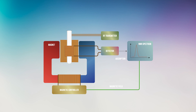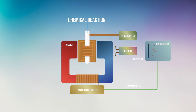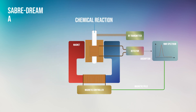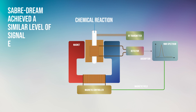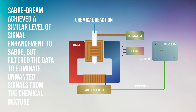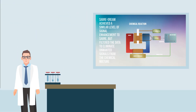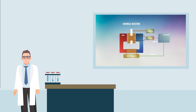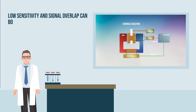Dr. Norcott tested this approach, comparing SabreDream to each technique in isolation while monitoring the progress of a chemical reaction. SabreDream achieved a similar level of signal enhancement to Sabre, but filtered the data to eliminate unwanted signals from the chemical mixture. This experiment shows that the two major weaknesses of NMR — low sensitivity and signal overlap — can both be mitigated at the same time.